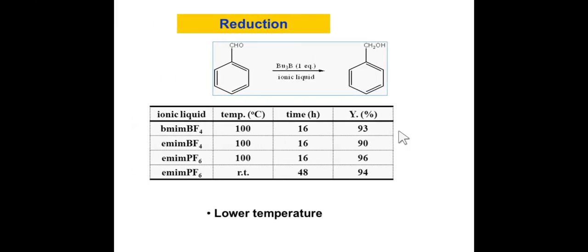The next is a simple reaction: conversion of CHO, that is aldehyde, into alcohol. That is the reduction of aldehyde to alcohol. If we use this kind of ionic liquid, at room temperature we can convert it to 94%. If we slightly increase the temperature, the time is reduced to 16 hours. If you don't want to waste energy, just keep the reaction at room temperature for 48 hours and you get 94% reduction.